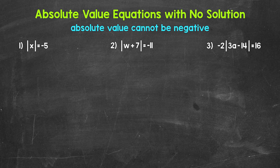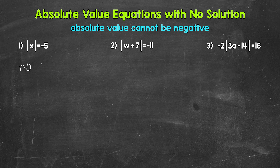Let's jump into number one where we have the absolute value of x equals negative 5. And this is very important — the absolute value of something cannot be negative. There's no way to make this work. There isn't anything x can equal where the absolute value will equal negative 5. You may be thinking, how about negative 5? Well, the absolute value of negative 5 is 5, so that won't work. There is no solution for this equation.